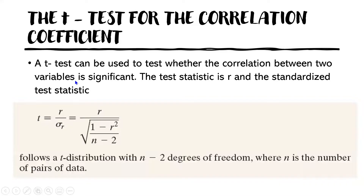A t-test can be used to test whether the correlation between two variables is significant. The test statistic is R, and the standardized statistic is given by the equation where n is the number of pairs of data. The degree of freedom is n minus two.